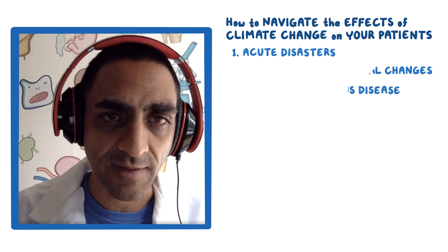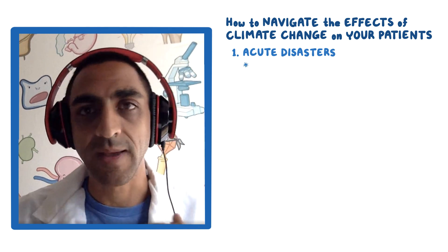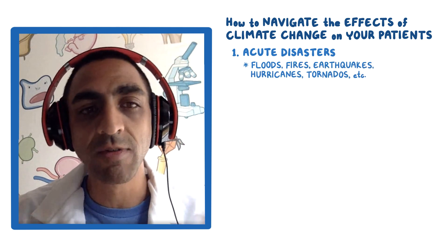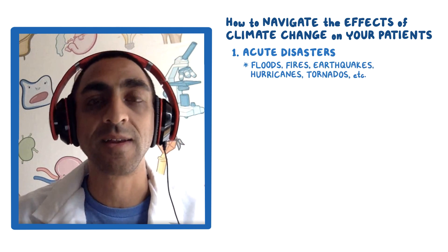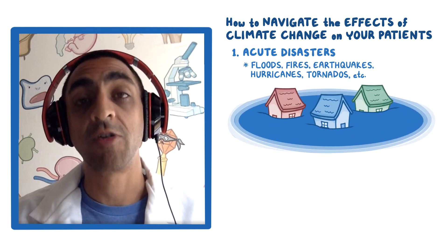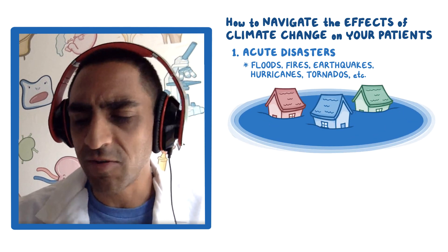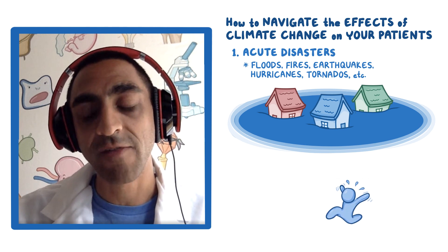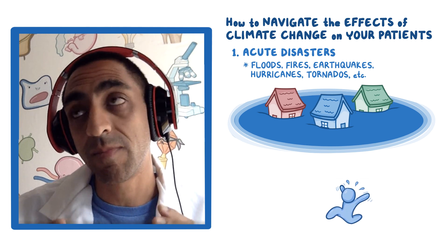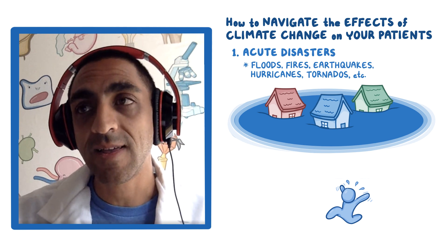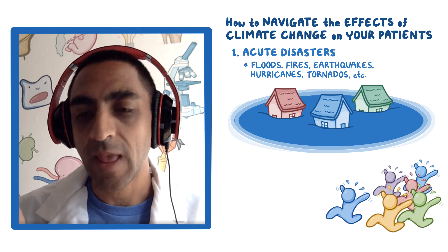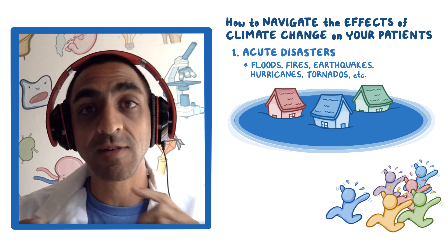Acute disasters would be things like floods, fires, earthquakes, hurricanes, tornadoes. If one of these events strikes your area, you've got an influx of patients that have many, many times traumatic injuries, occurring in large numbers. Those patients are going to go to the nearest hospitals.